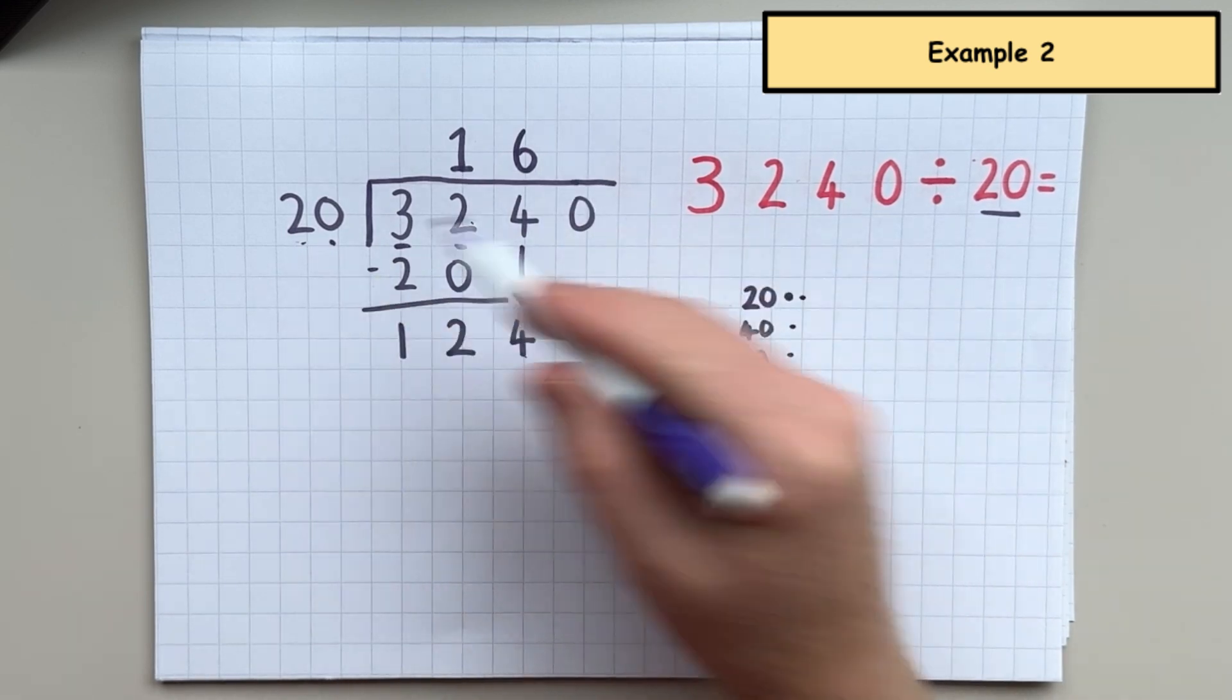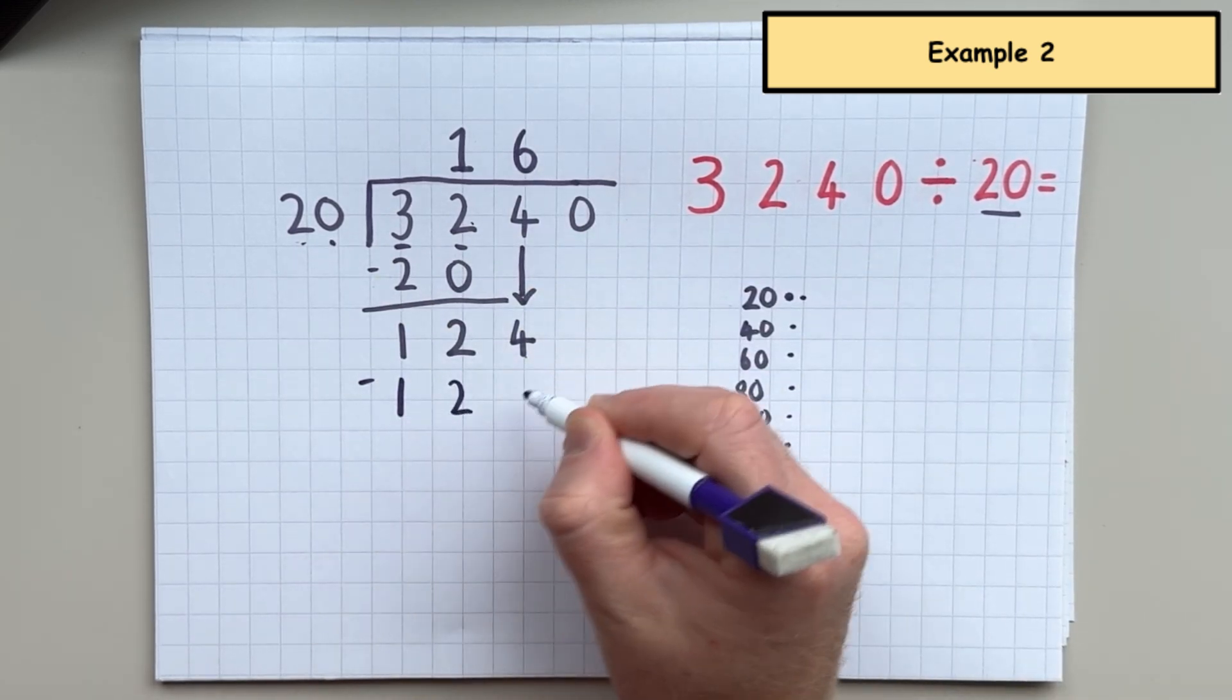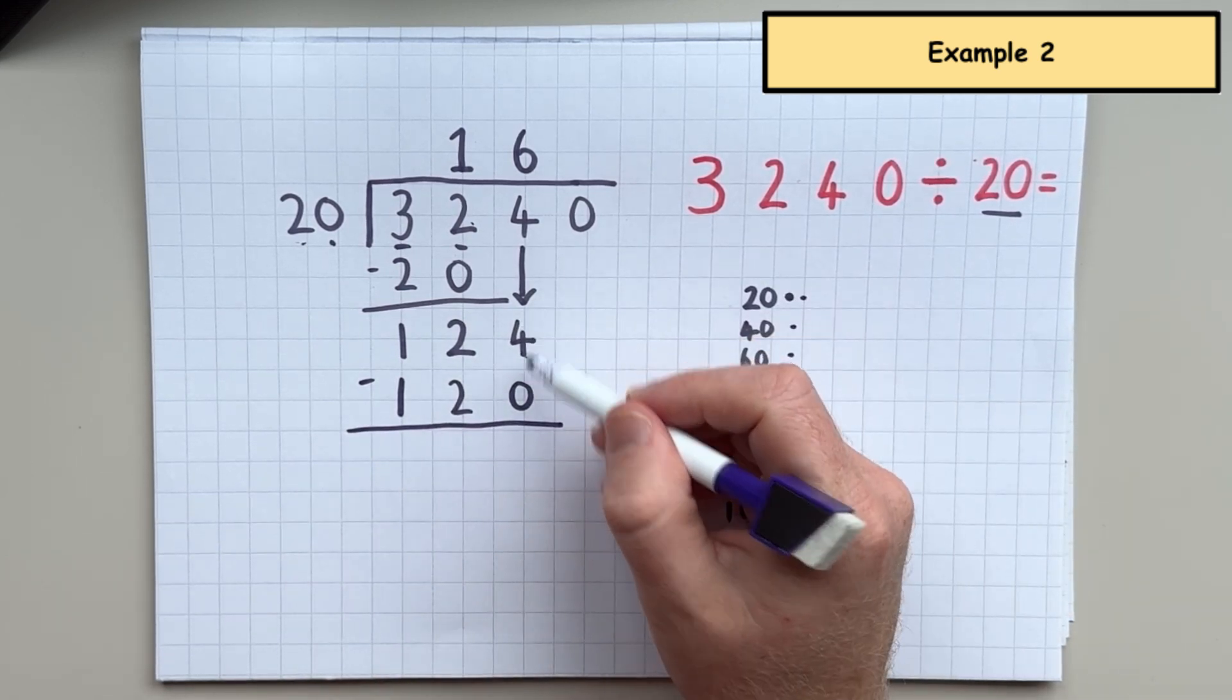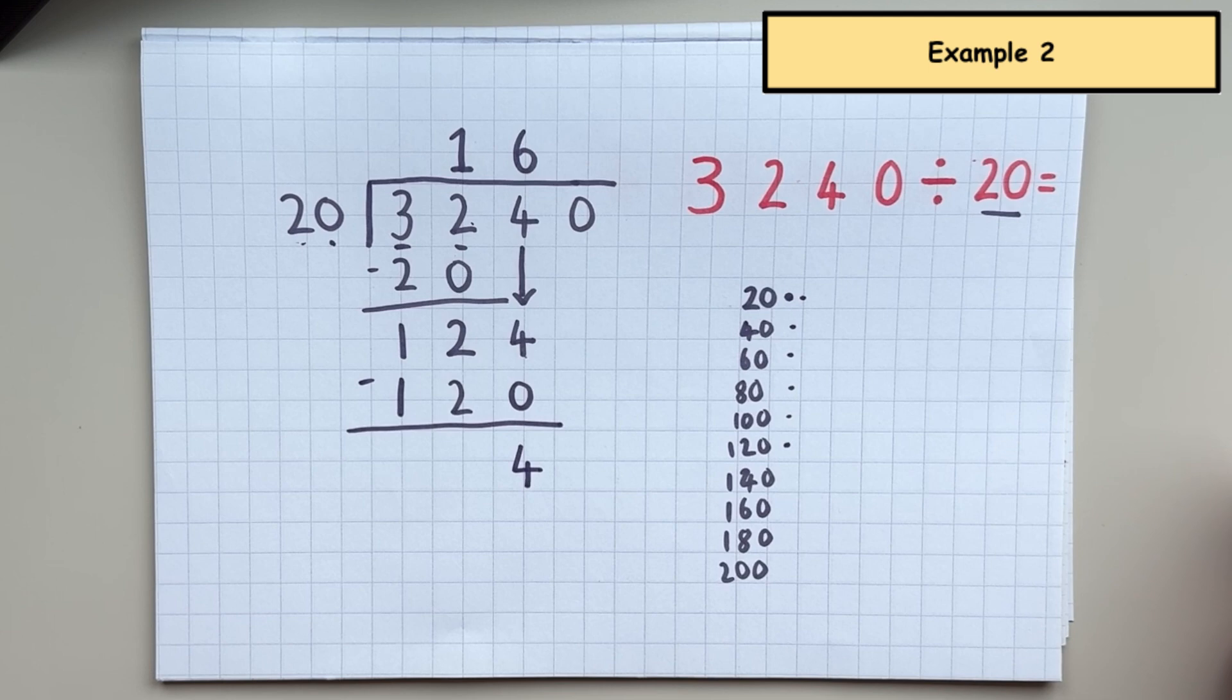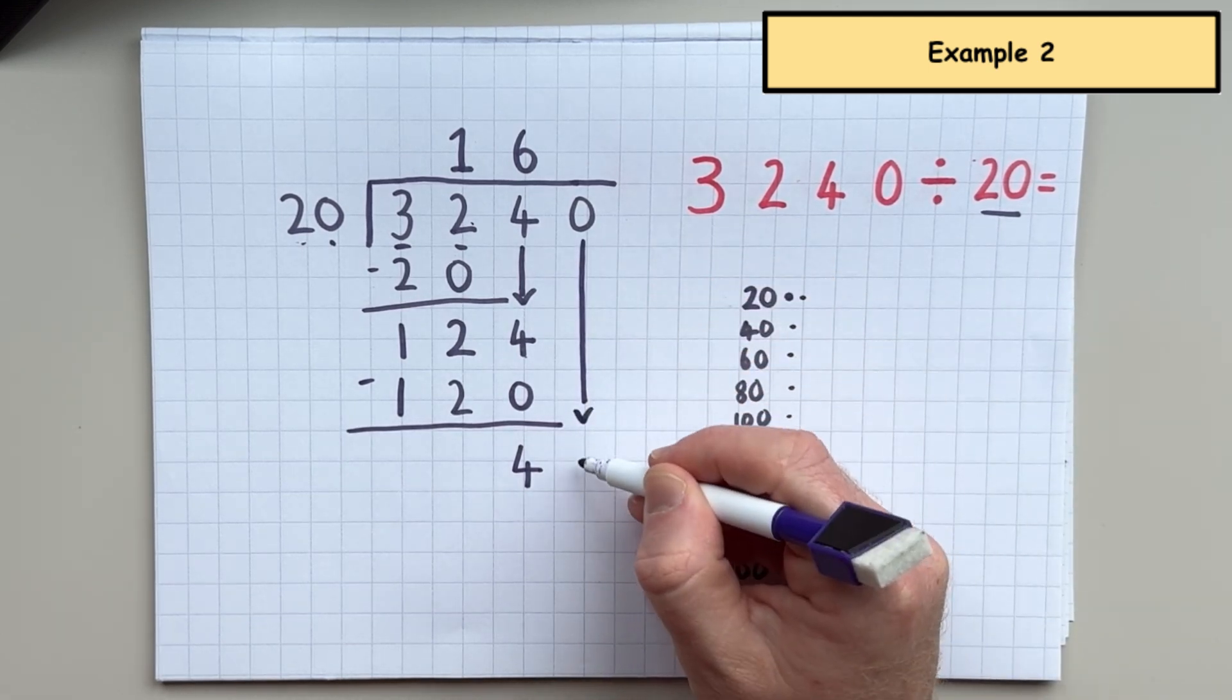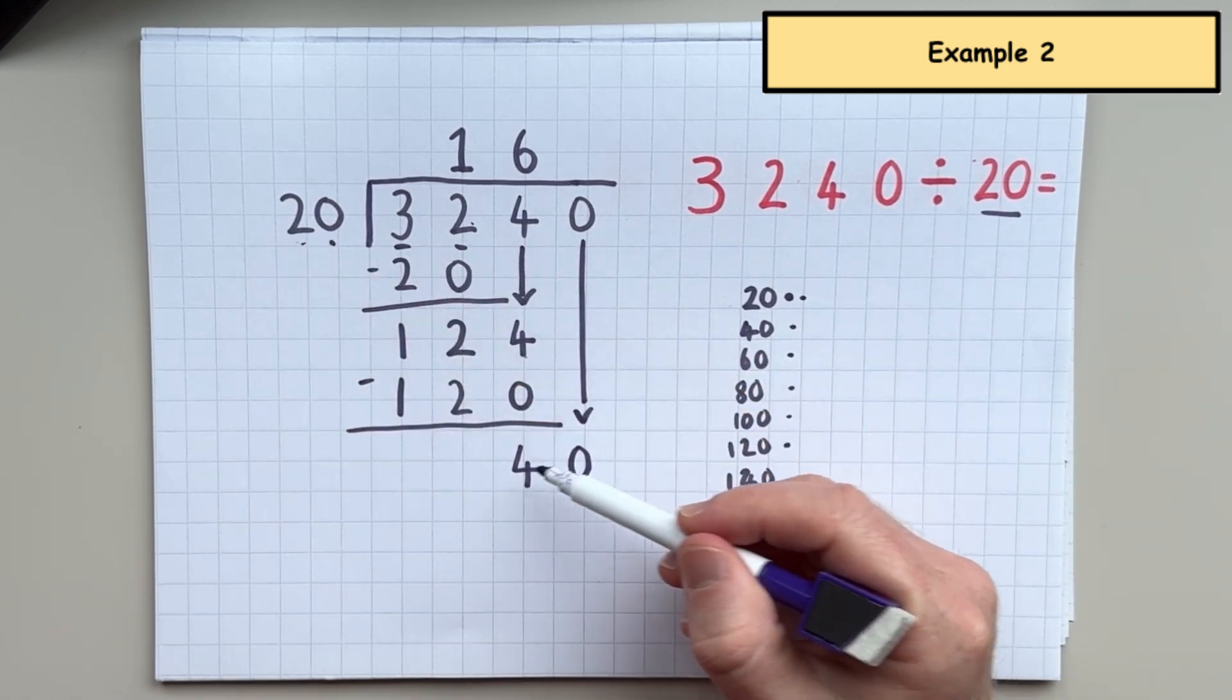Six 20s is 120. So I need to take away 120. So that would leave me with four. And now I need to bring down this zero. And that makes 40.